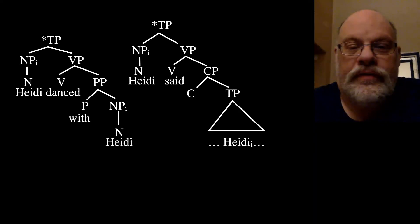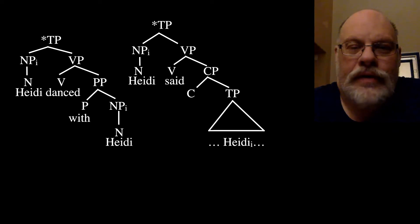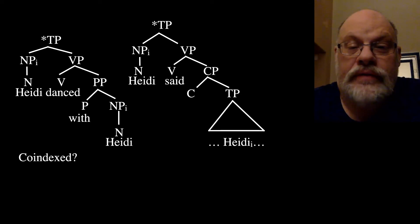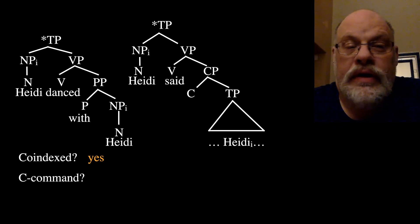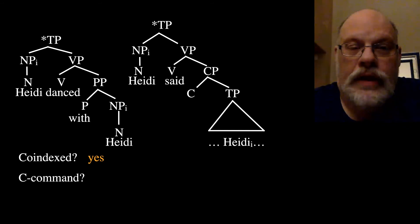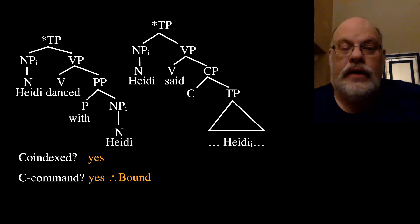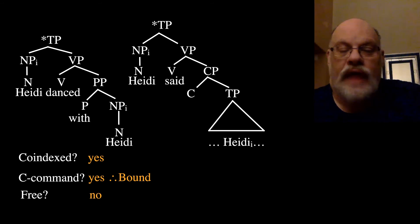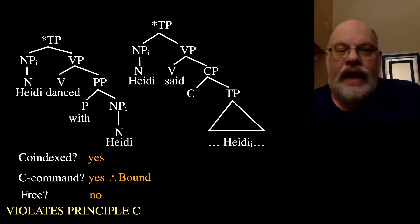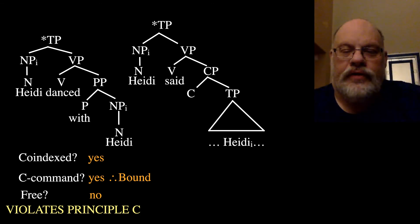Let's look at a couple of trees. Take 'Heidi danced with Heidi' — we'll use the same name twice. Although the two noun phrases are co-indexed, the higher NP C-commands the lower NP, which means they're bound. If you have an R-expression like the lower noun phrase Heidi, and it is bound, that's a violation of Principle C — it's not free. That's why there's an asterisk in front of this tree.